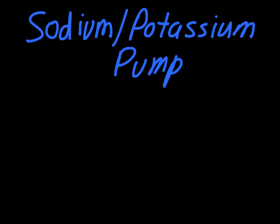The body often uses this as a way of maintaining balance. The first thing to understand is we're talking about sodium, which will be referred to as Na+. This uses the symbol for sodium from the periodic table, and the plus represents that it's a sodium ion — a charged particle. This particular sodium has given up its electron, so it's now a positive ion.